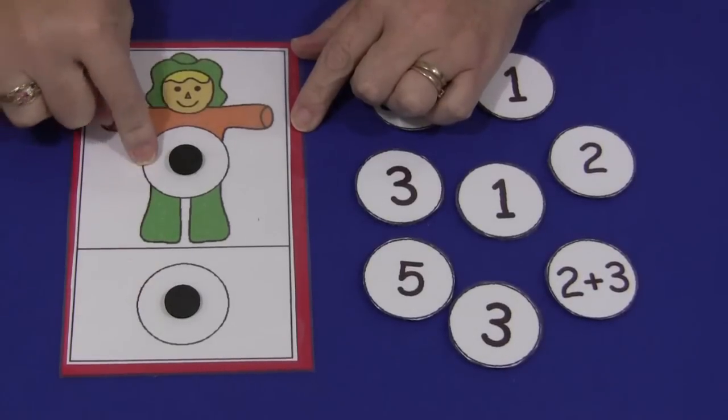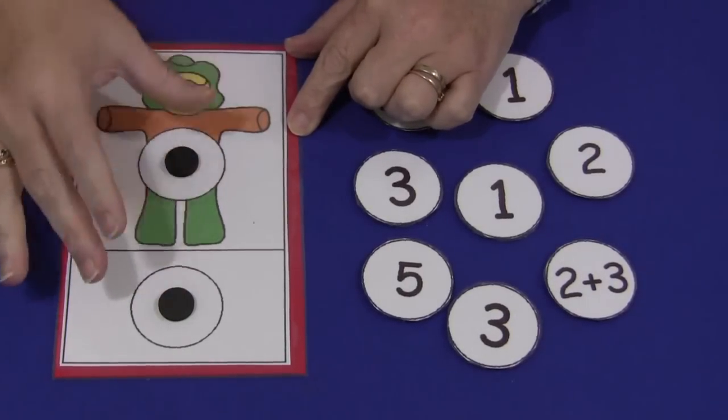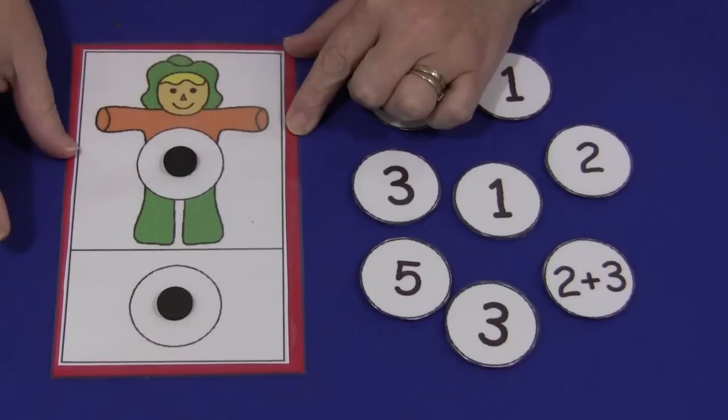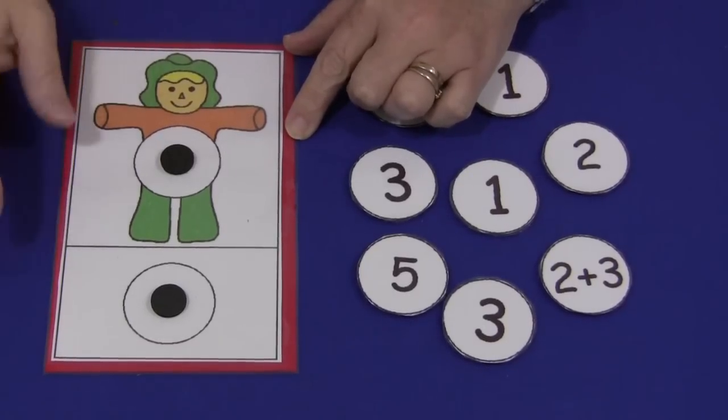In each of the two blank circles, I've attached a self-adhesive magnet. We like to use magnets to keep the pieces secure on the mats, but you don't have to. You can just leave them blank or use velcro or the magnets.